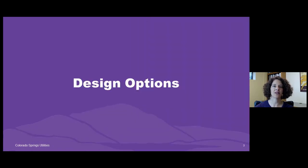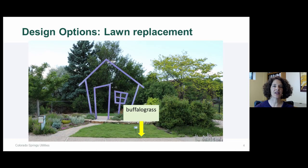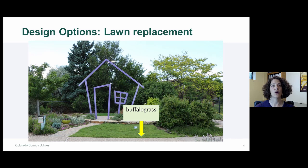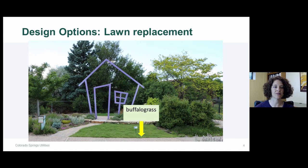Let's first talk about design options. Native grasses can be used in a variety of ways, but the first option is to simply plant them in areas where you would normally plant a traditional turf grass — a front yard or a backyard lawn area — if you've got the right growing conditions and the right intended use.